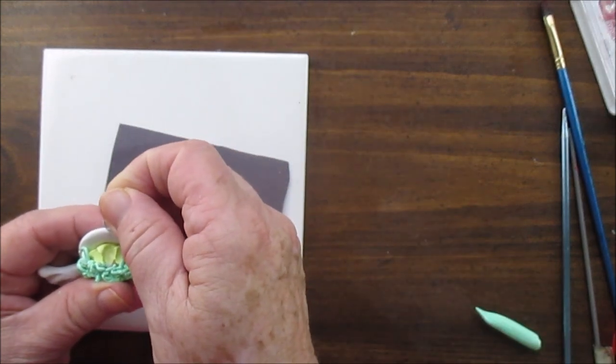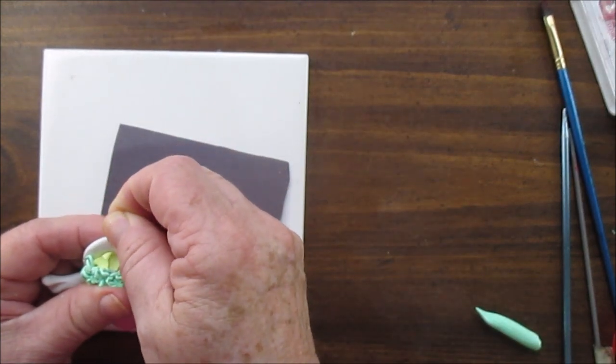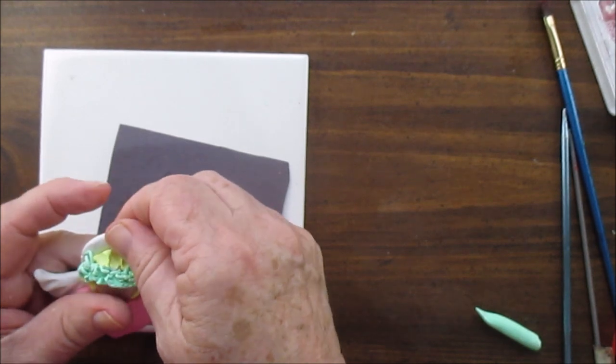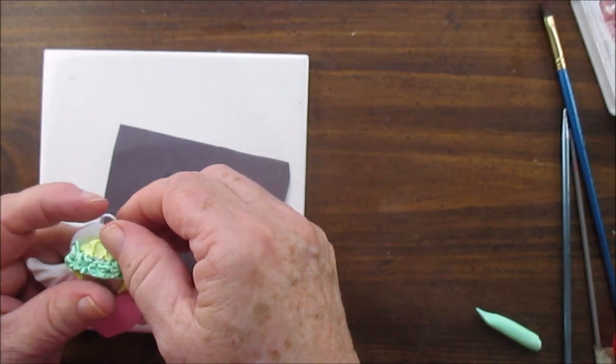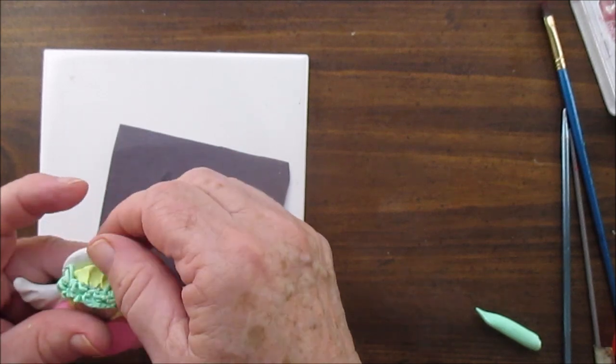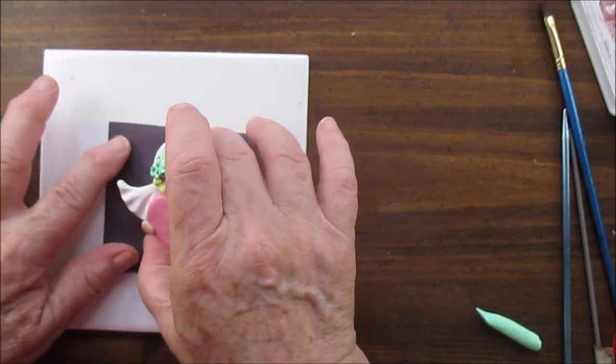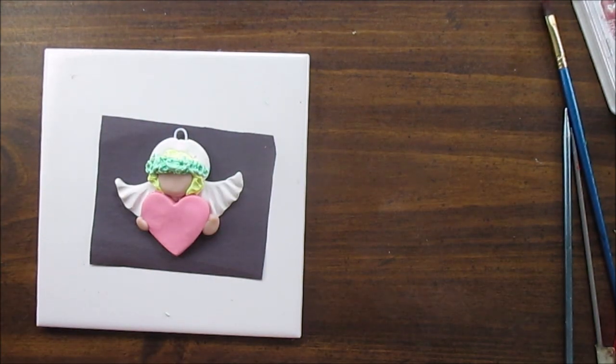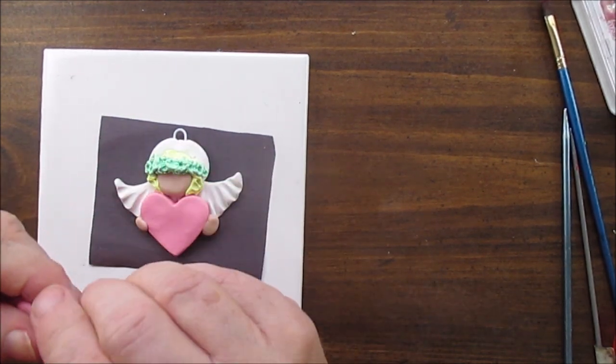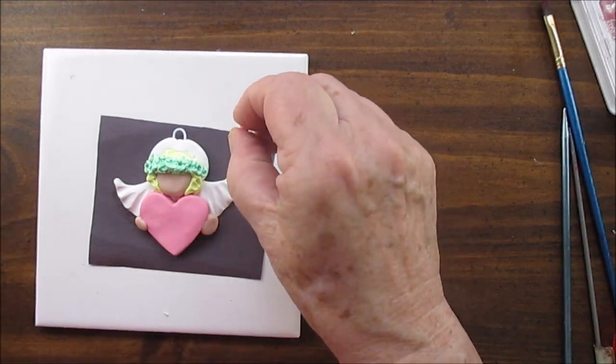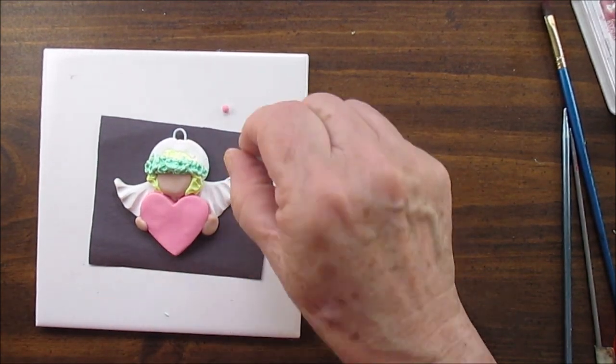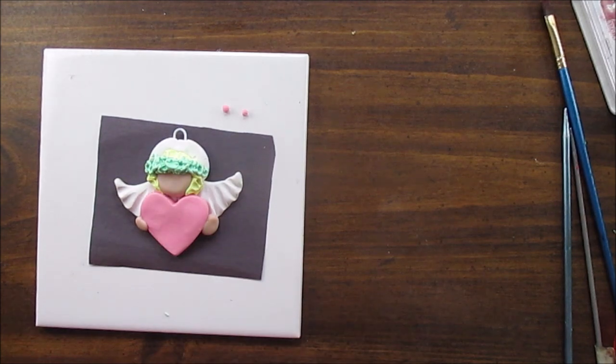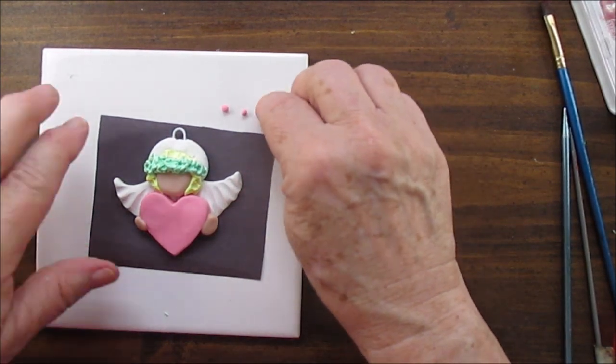Now let's get the hook in before we do anything else so we don't squish anything. We're going to make little balls, little pink balls to put on there. I think I put three on there. And then of course we're going to blush before we bake, and that's it for her.